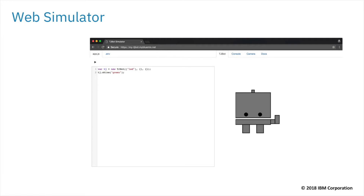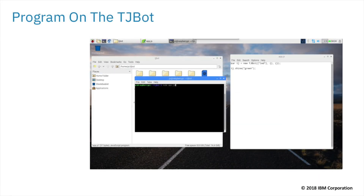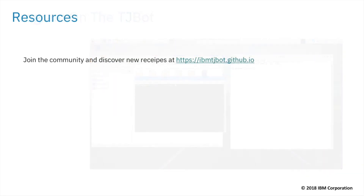In this course we'll use a browser based online simulator to simulate the capabilities of a physical TJ Bot. No hardware is required. If you would like to follow along using a physical TJ Bot, you can run the same code featured in this course on a Raspberry Pi. For more information about TJ Bot, please refer to these resources.